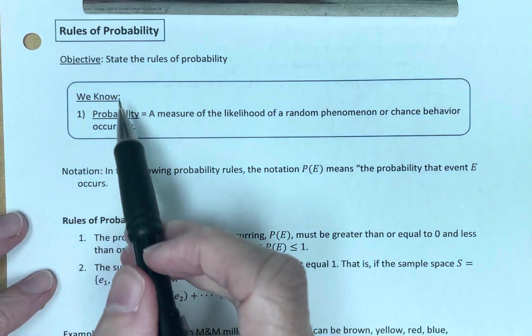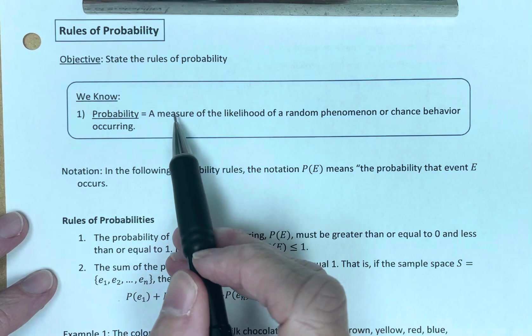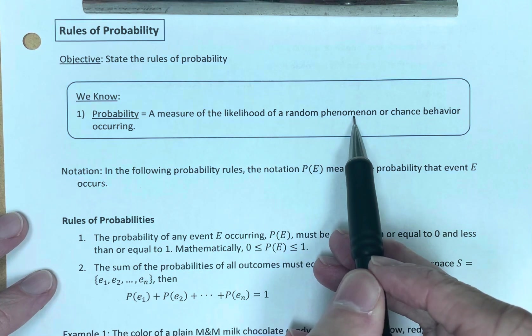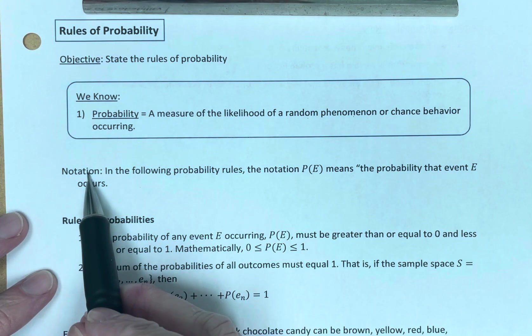Let's remind ourselves what we already know. We already know what probability is. It is a measure of the likelihood of a random phenomenon or chance behavior occurring. Let's also remind ourselves about some notation. We saw this in a previous video.